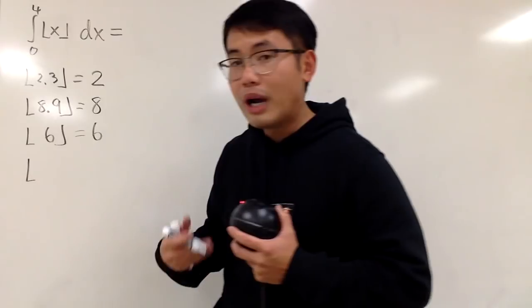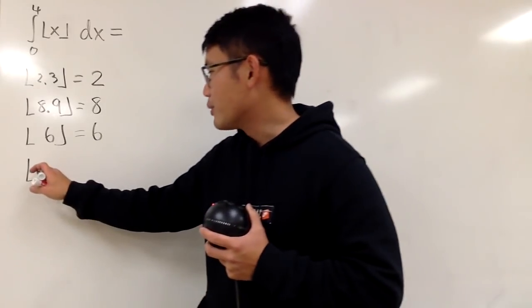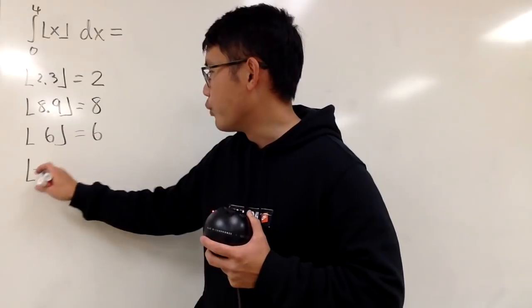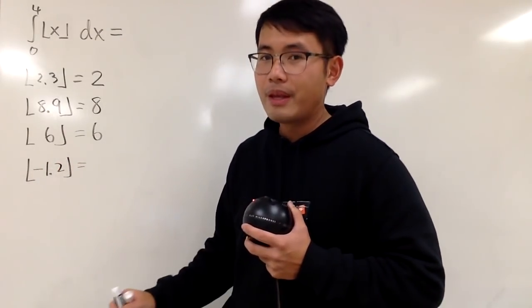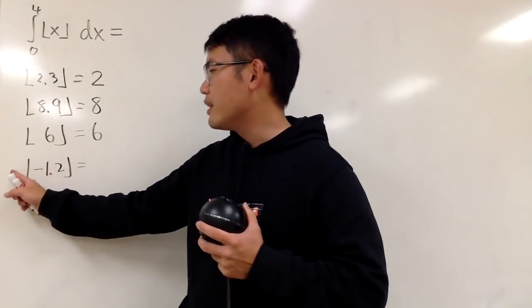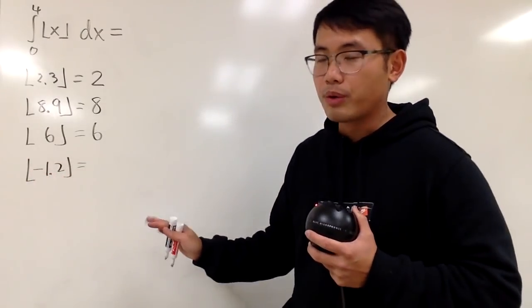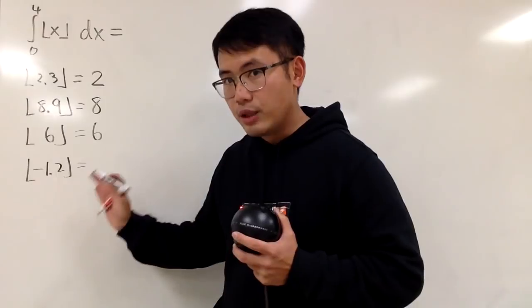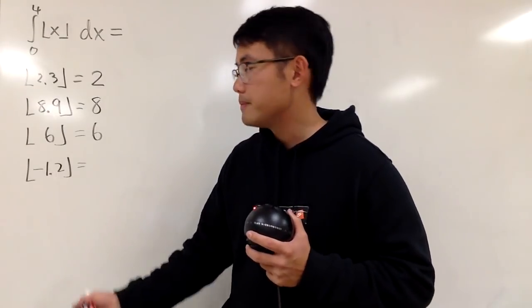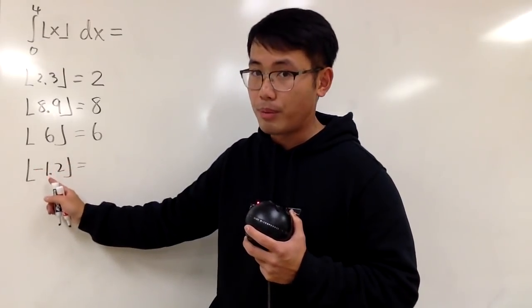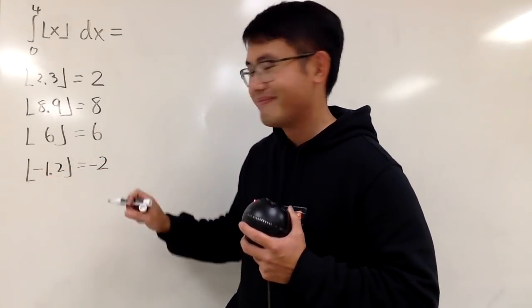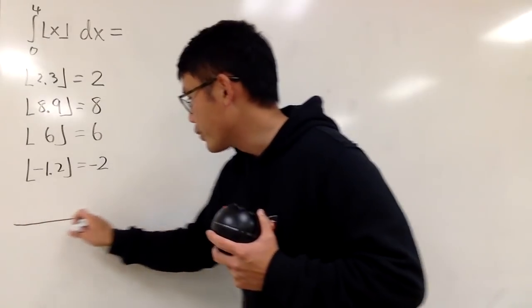It's slightly trickier when you have negative numbers, but it's okay, you can handle it. Let's say you have the floor of -1.2. Well, you don't just bring the negative out and then do the floor of positive 1.2. It's not like that. The answer to this, you have to use the definition, which is the biggest integer that's less than or equal to negative 1.2, which is negative 2.